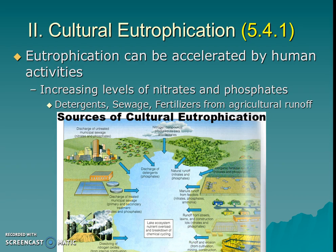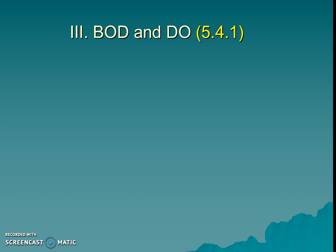Even fertilizers from our lawns, if we accidentally apply them right before a rainstorm, contribute. So we have to really think about solutions and how we could lower this nitrate and phosphate input, because those are the things that accelerate this process and eventually cause low oxygen in a lake. Low oxygen sounds quite bad — organisms can't survive with that.